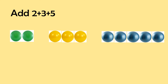Add 2 plus 3 plus 5. So, we have 2 green balls, 3 yellow balls, and 5 blue balls. Now, how many balls in total? To add these 3 numbers together, we just combine all the balls and count. So, let us count the number of balls: 1, 2, 3, 4, 5, 6, 7, 8, 9, 10. So, we have 10 balls.